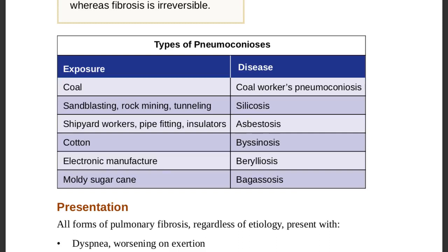Additional exposures: moldy sugar cane causes bagassosis; berylliosis is from electronic manufacturing. All forms of pulmonary fibrosis, regardless of etiology, present with dyspnea worsening on exertion, fine crackles/rales on examination, loud pulmonic P2 heart sound, and clubbing of the fingers.